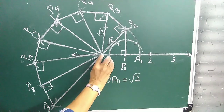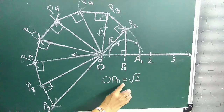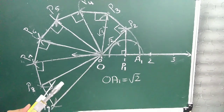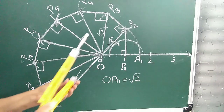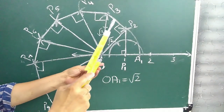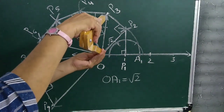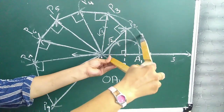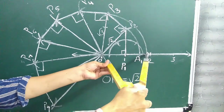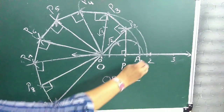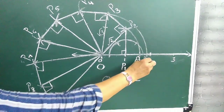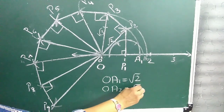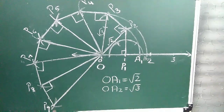OA1 represents root 2. Similarly, we can locate root 3 — with O as center and OP3 as radius, draw another arc which intersects the number line at A2. OA2 represents root 3.